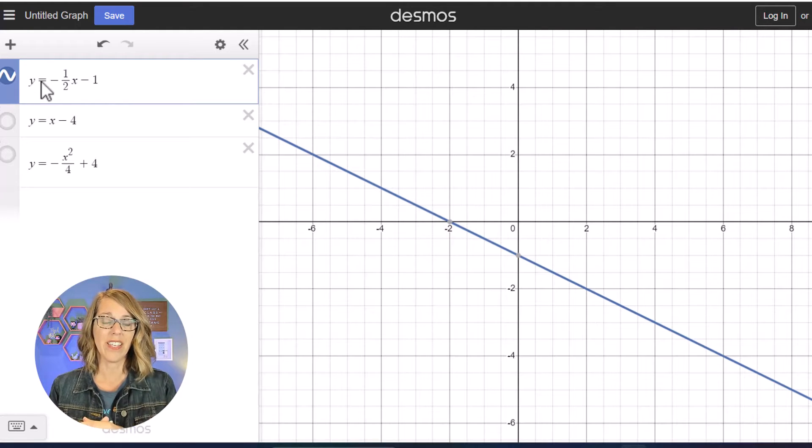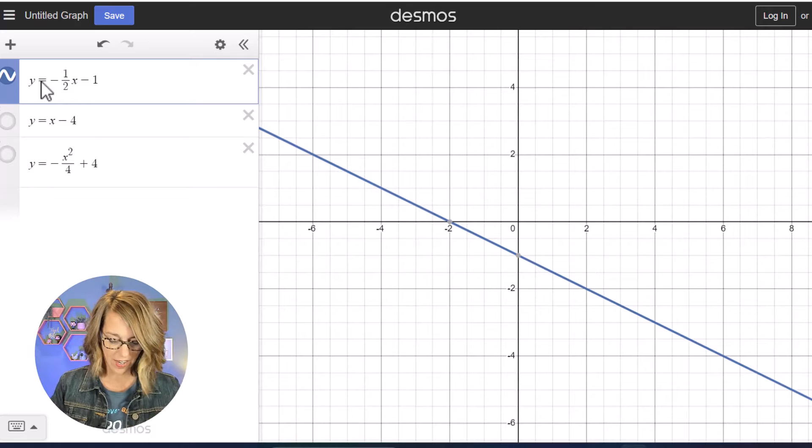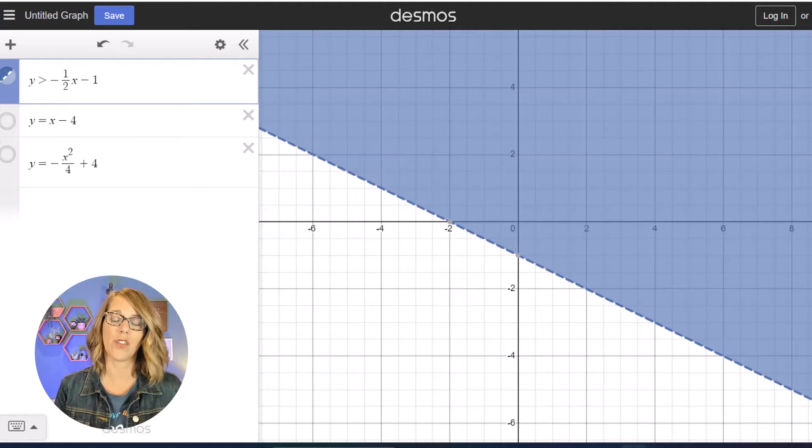If I change this to an inequality, say that I want Y more than, and I change this instead to greater than, it's now shading above the line.